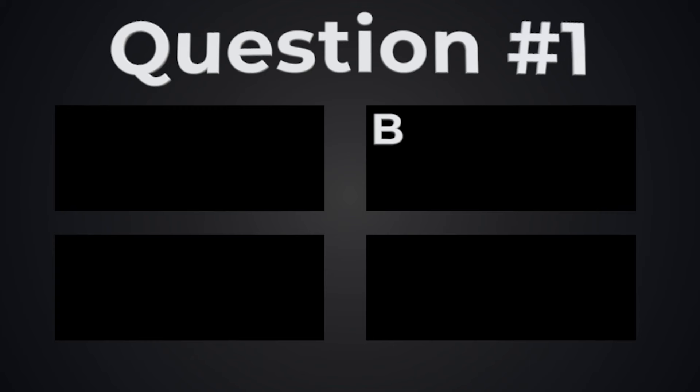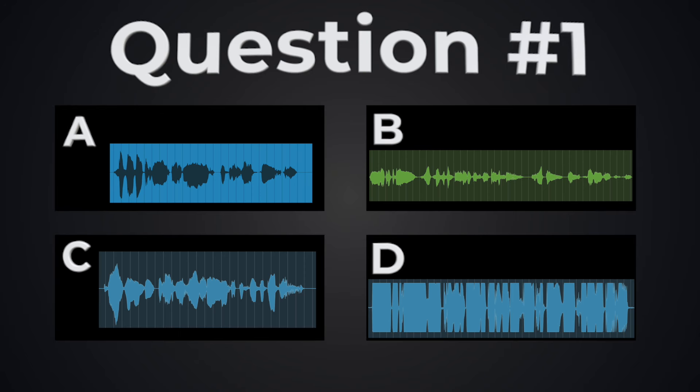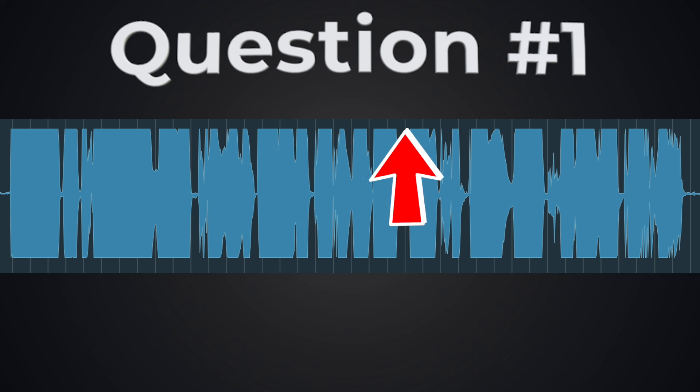For question one, listen to these four short examples and identify the one where clipping occurs. Notice how one of these is clearly more distorted than the others. The waveform shows that the peaks have been completely squared off. This means that the full dynamic range of the performance hasn't been accurately recorded because the gain level overloaded the system. This results in a very harsh, sausage-like recording that is unpleasant to listen to.